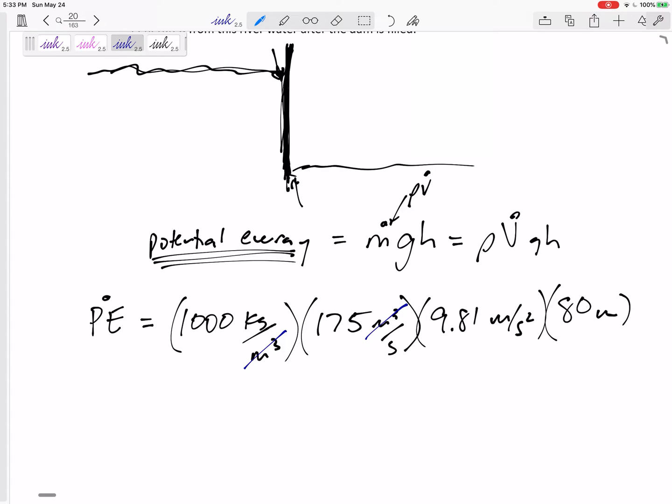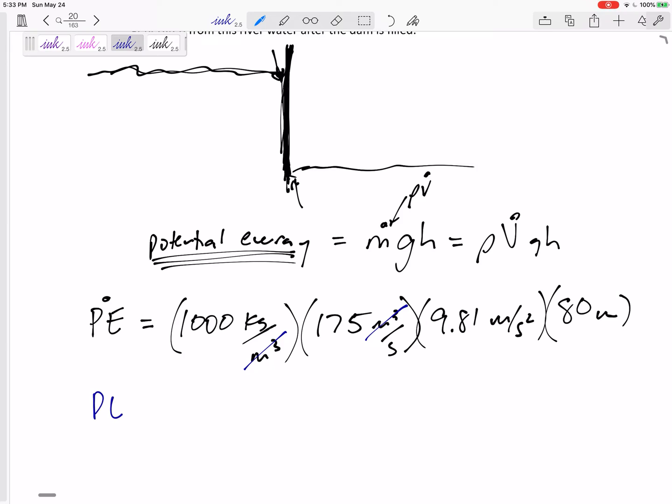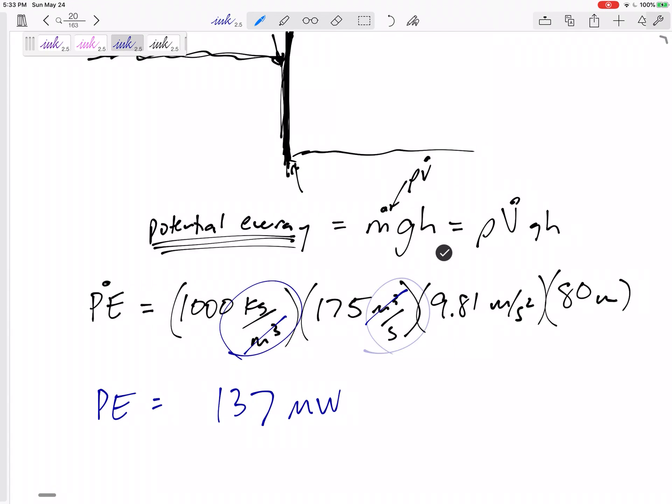The potential energy would be a very large number. I would get 137 million watts would be my answer. But I know that a kilowatt is a thousand, a megawatt is 10 to the 6, so 137 megawatts. If I left everything as kilograms and meters then my answer would be in watts. So I did that in my calculator: one thousand times 175 times 9.81 times 80 and I get 137,340,000. And so I moved six decimal places to get from watts to megawatts.